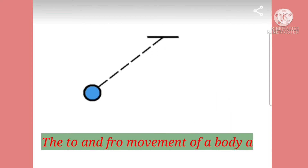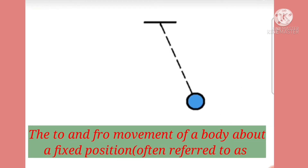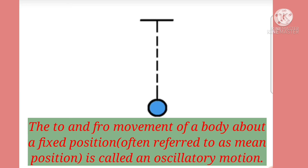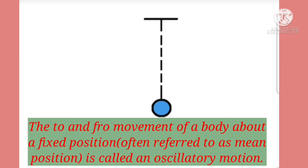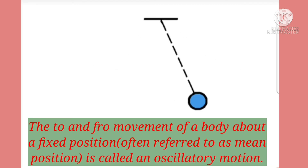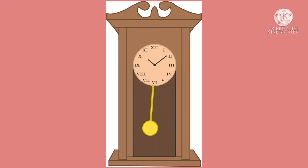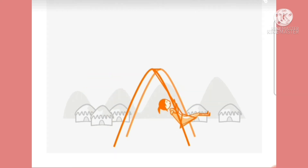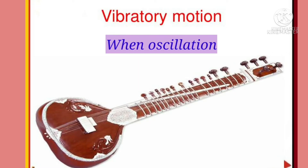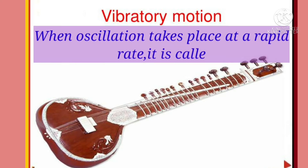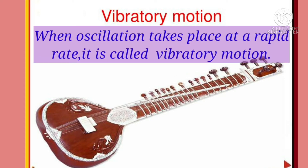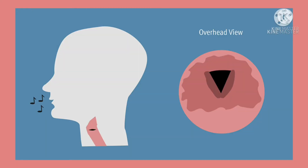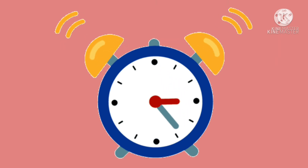Let us understand oscillatory motion. The to-and-fro movement of a body about a fixed position — often referred to as mean position — is called oscillatory motion. The movement of a pendulum and swing are examples of oscillatory motion. When oscillation takes place at a rapid rate, it is called vibratory motion. Movement of our vocal cords and a ringing alarm clock are some examples of vibratory motion.